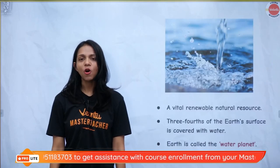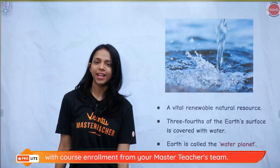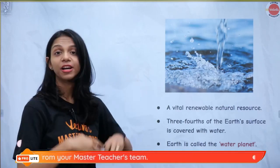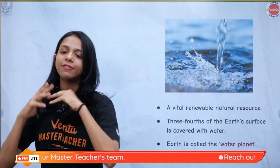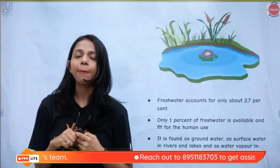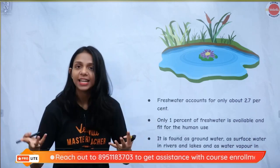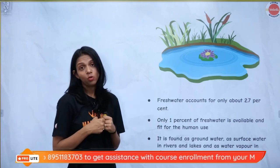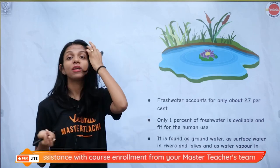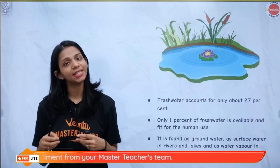Let's begin with water. Our planet is blue in colour — it is called the blue planet because three-fourths of our planet is covered with water, and one-fourth is covered with land. That is why our planet is called the blue or the water planet. But most of this water is salty sea water, which is not fit for human consumption — you cannot drink it, as it would destroy your kidneys.